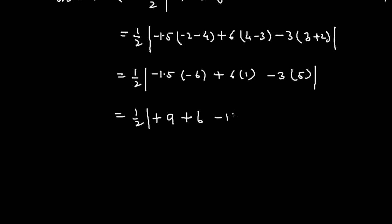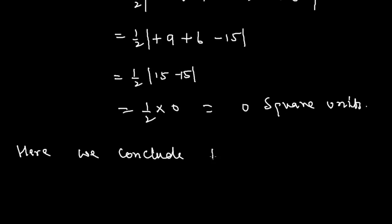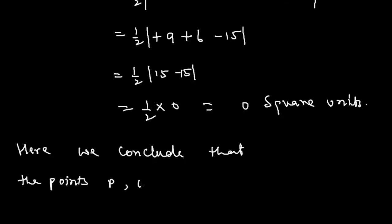This is equal to 1/2 times the modulus of 15 minus 15, which equals 1/2 times the modulus of 0, which is 0 square units. Here we conclude that the points P, Q, and R are collinear. So this is the solution of the example, thank you.